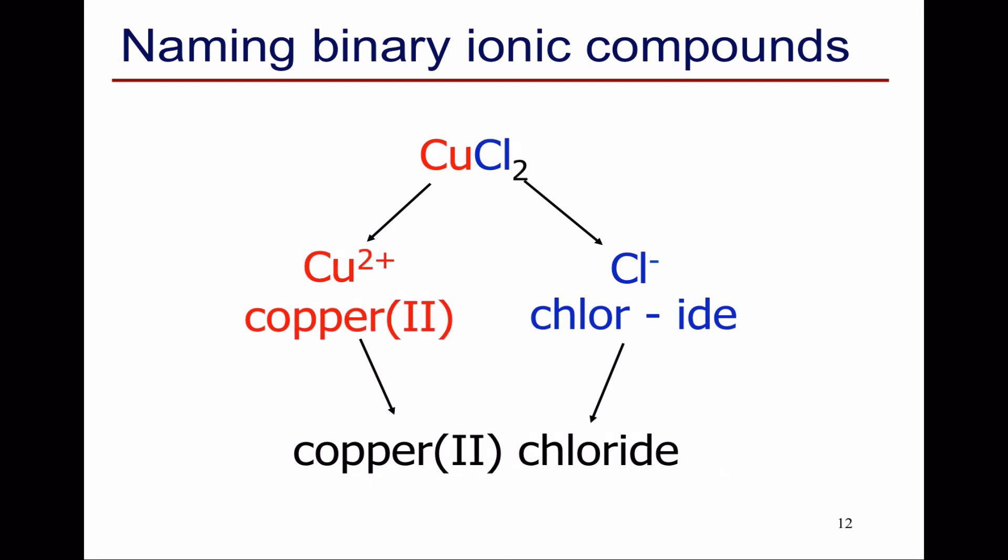CuCl2. Now we have two Cl-, so the copper must be in the 2+ oxidation state. Copper2+, copper(II). So the name of the cation is copper(II). Again we have chloride, so the whole name is copper(II) chloride.